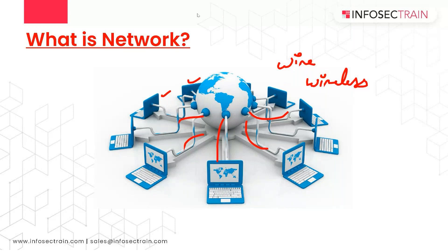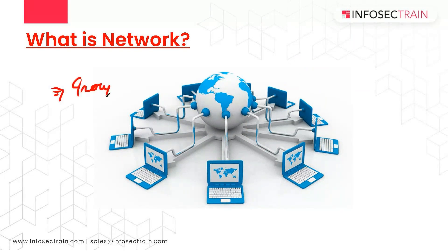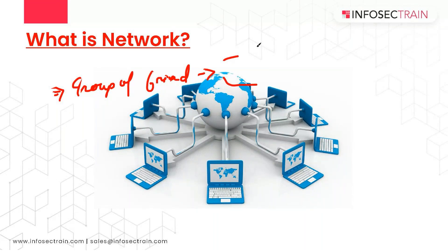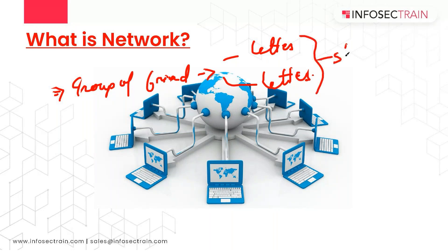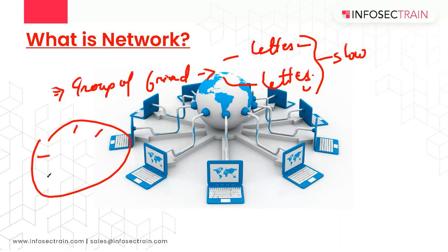Let's understand this with the help of an example. We have some group of friends, and these friends want to share information and files with each other. They could send letters through the post office, but that would be very slow and inefficient. Instead, they create a network where anyone can share their information instantly.